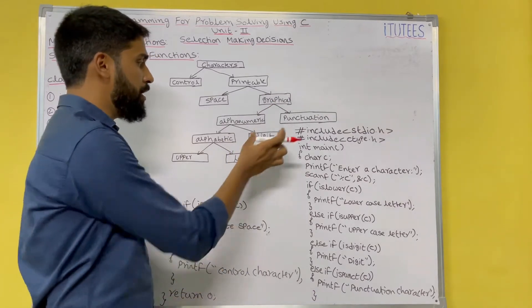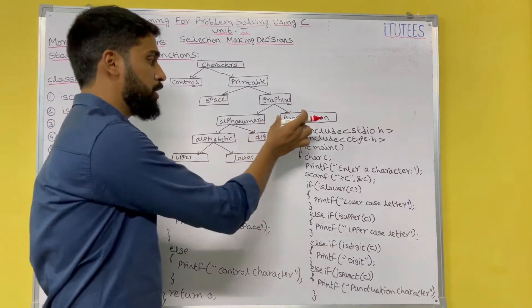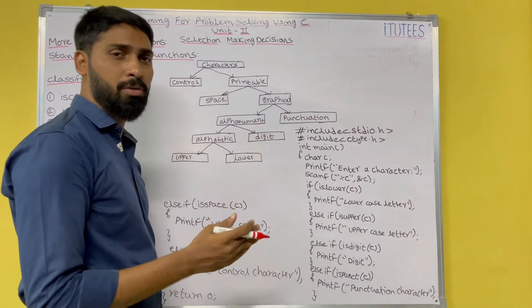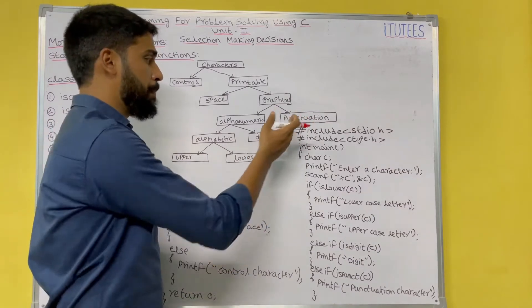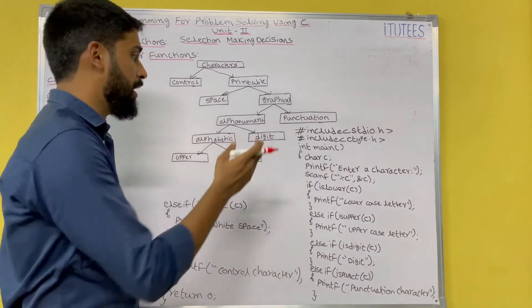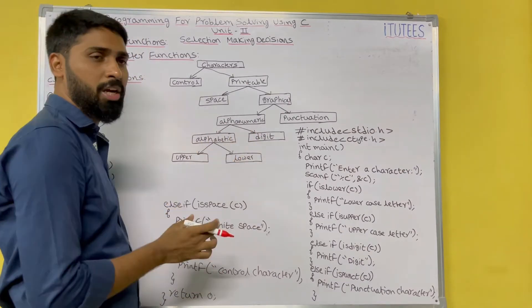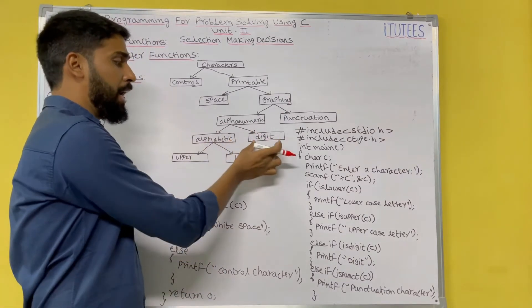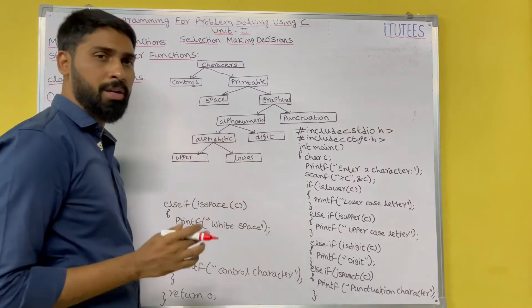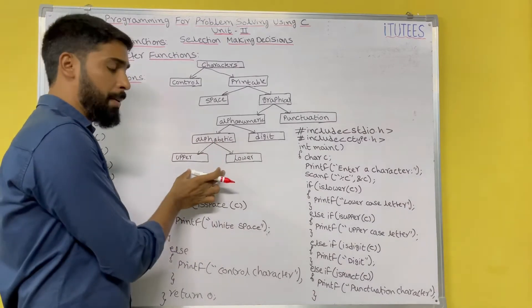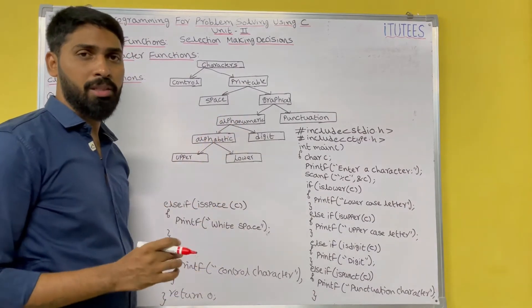In graphical we have two types: one is alphanumeric, another one is punctuation. Punctuation is nothing but comma, double quotation, single quotation — these keys are called punctuation keys. Remaining keys are called alphanumeric. In alphanumeric there are two types: alphabetic and digit. All the digits come into digit keys, and alphanumeric has two types — one is upper, another one is lower. So these are the keys available in the keyboard.